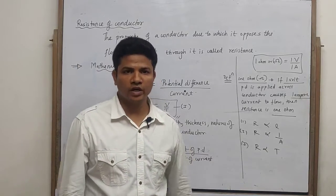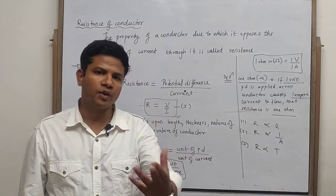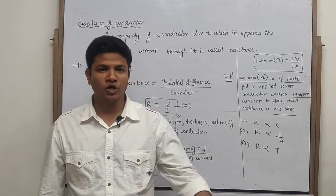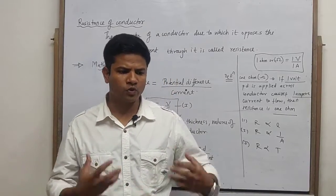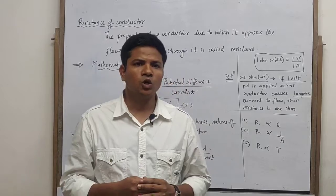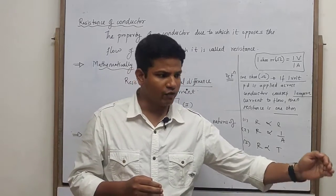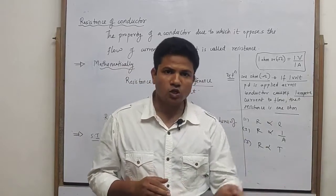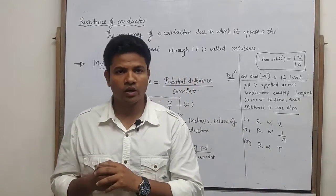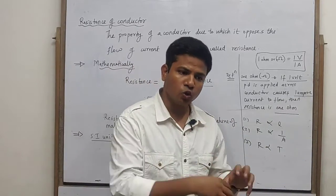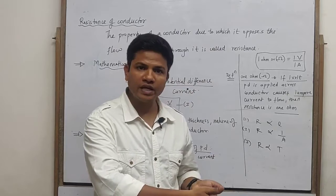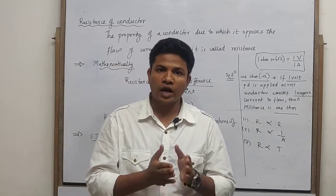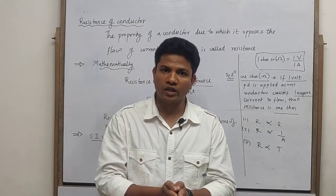Now let us talk about resistance of the conductor. This is another part of Ohm's law. We talked about resistance of the conductor — we didn't know what to say when we attach the source of potential difference. Electrons flow from negative terminal to positive terminal. Once the electrons start flowing, they collide with the wall and positive ions. So this collision opposes the flow through the conductor.